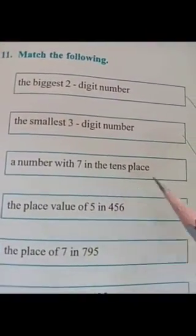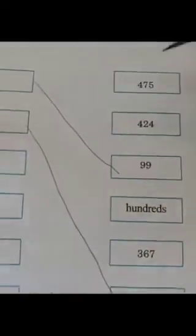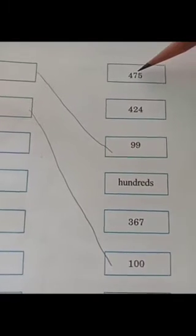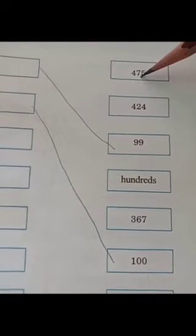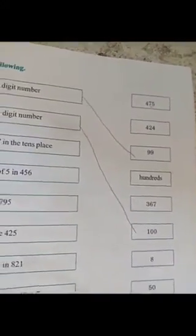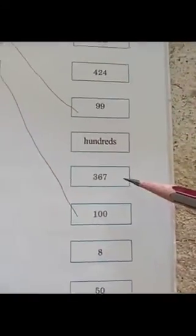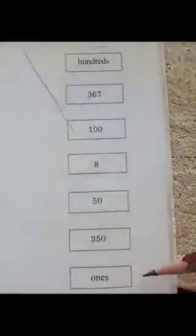Next one — a number with seven in the tens place. A number with seven in the tens place. Which number has seven in the tens place? This number has seven in the tens place. Here, ones place only — not there. So match it.